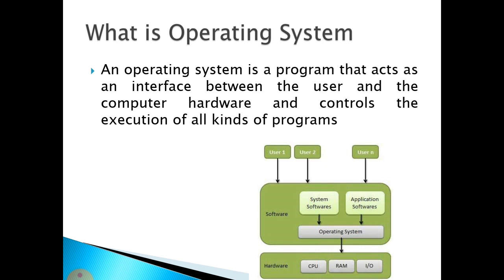A program is a set of instructions. There is a basic difference between program, process, and thread. The operating system itself is part of software — it is not hardware. More specifically, the operating system is a system software, not application software.